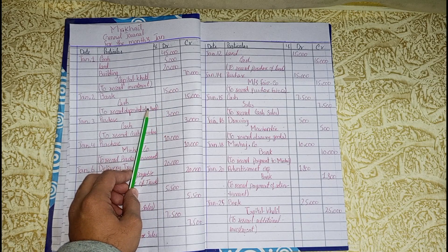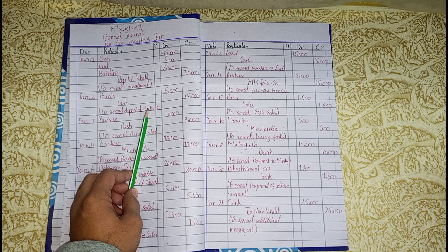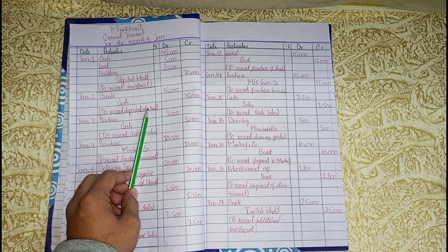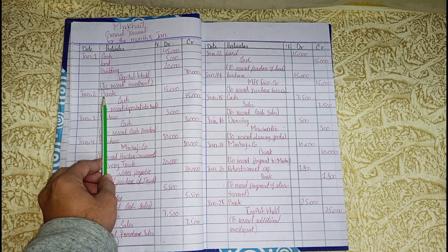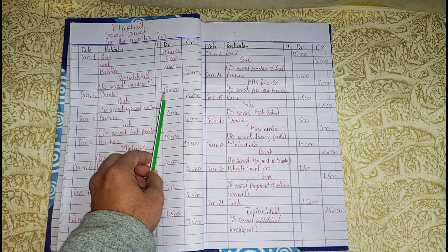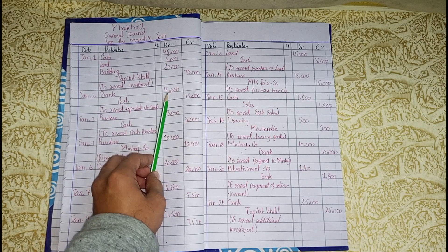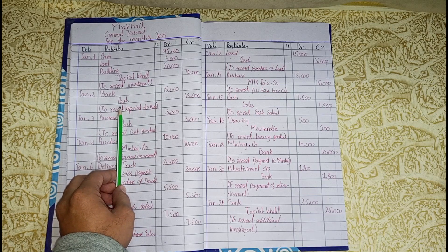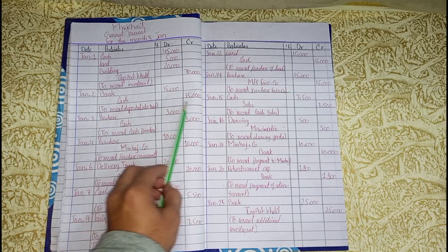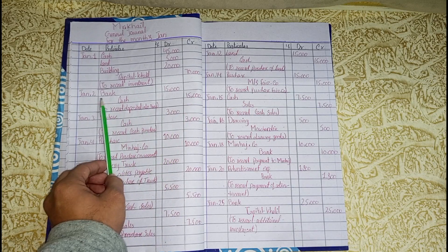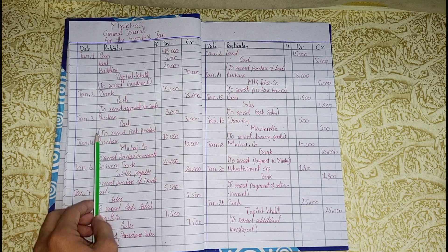January 2: Deposit Rs. 15,000 into the bank. If Khalil deposits cash into the bank, then the bank account is debited. Cash is credited because cash has been deducted. Now we have two records for this entry.